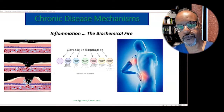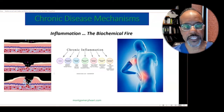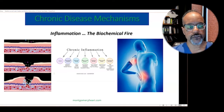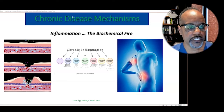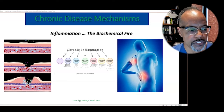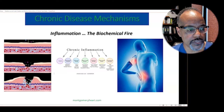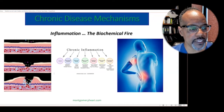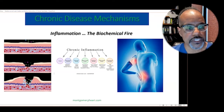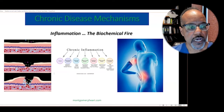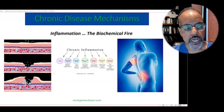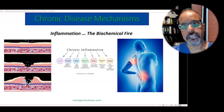First and foremost, inflammation — I like to equate it to a biochemical fire. Chronic inflammation underscores just about every chronic illness that we know of: cancer, neurological diseases, metabolic disorders, bone and joint diseases, autoimmune disease, cardiovascular disease. All of these are underscored by chronic inflammation.